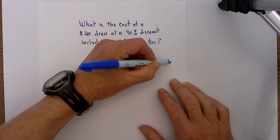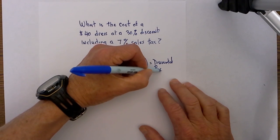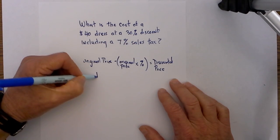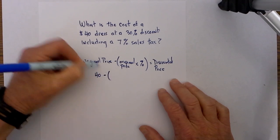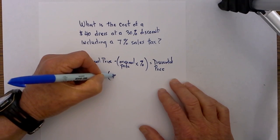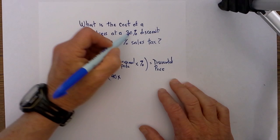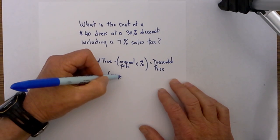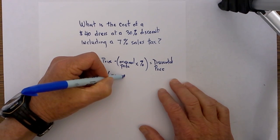Let's plug in some numbers so this makes sense. The original price is $40. Then we subtract the original price times the discount, which is 30%, and I will rewrite that as 0.30.